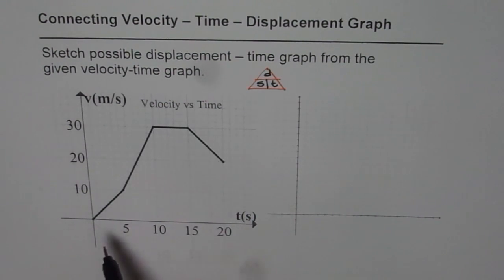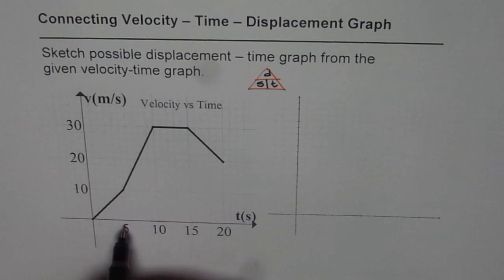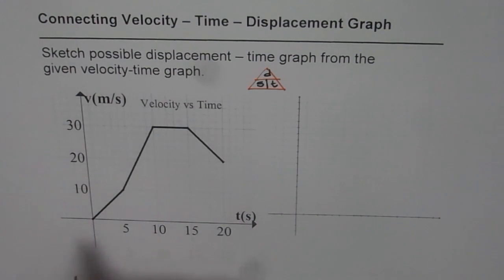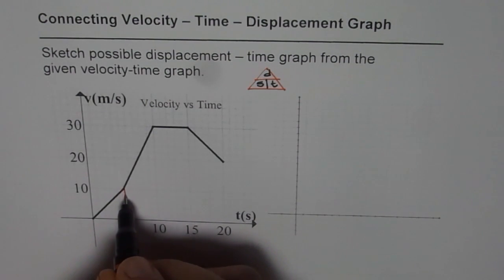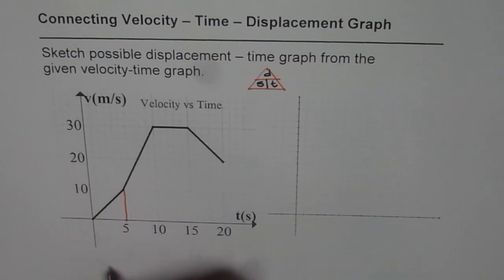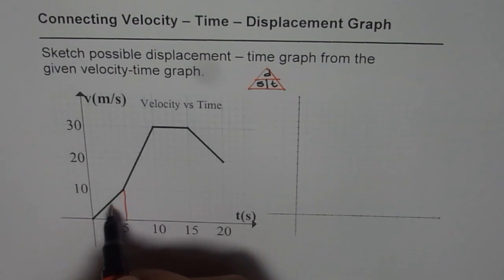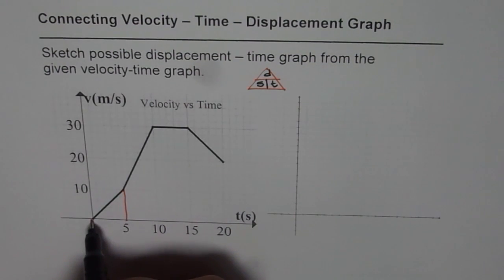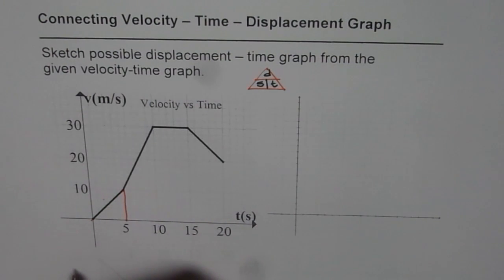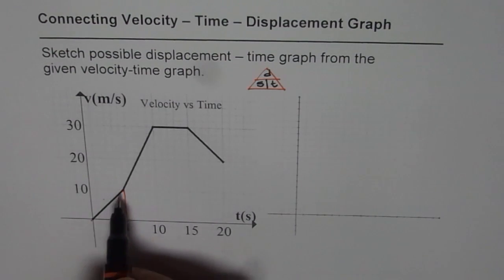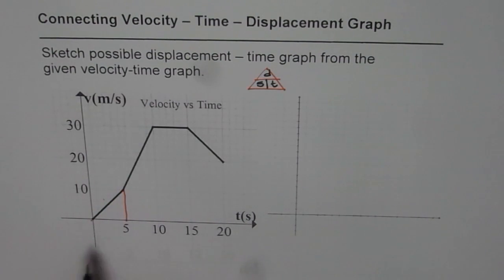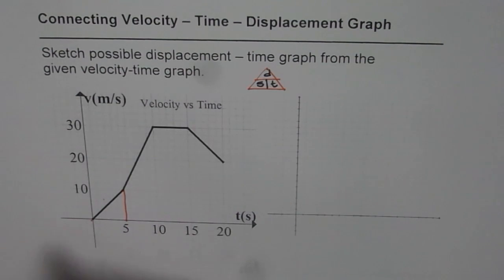The object is starting from the initial position which is 0. In the first 5 seconds, the velocity increases from 0 to 10. Within this period, how much distance is covered? The average velocity during this time is (10 + 0) / 2 = 5. If 5 is the average velocity and the object moves for 5 seconds, then the displacement should be 25. So in the first phase, we have a displacement of 25 meters.